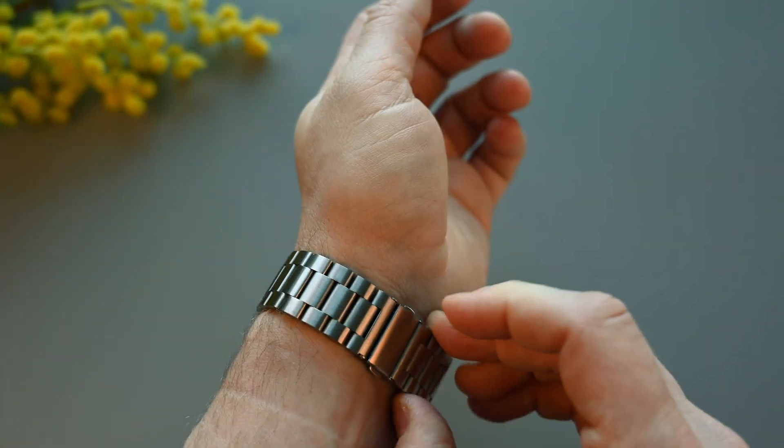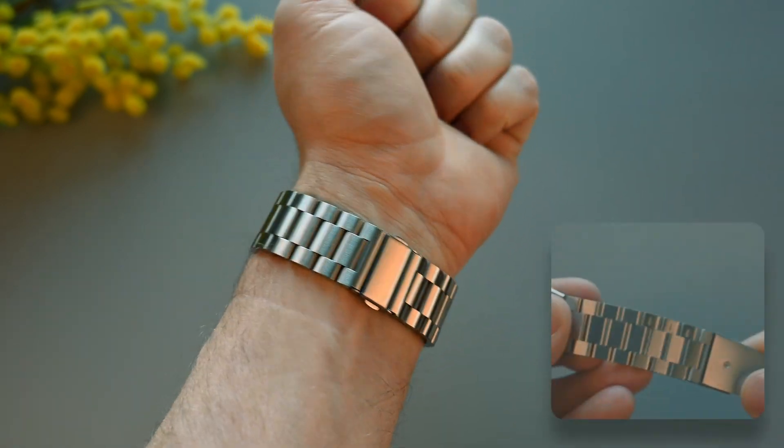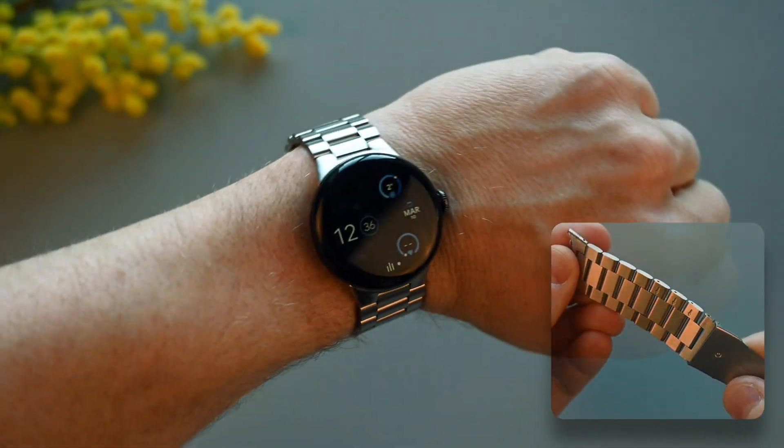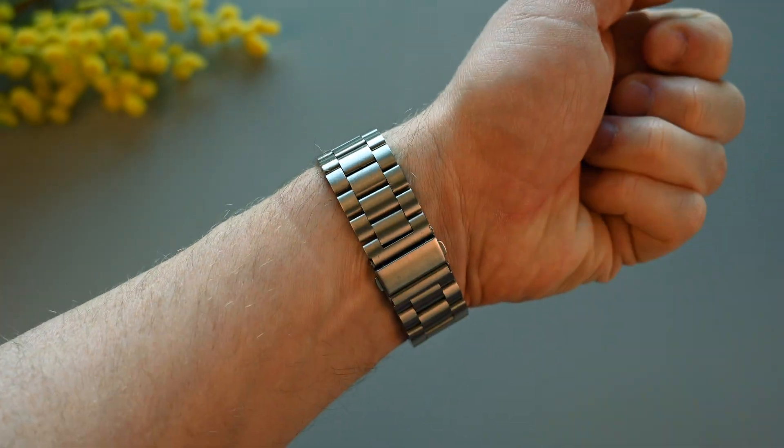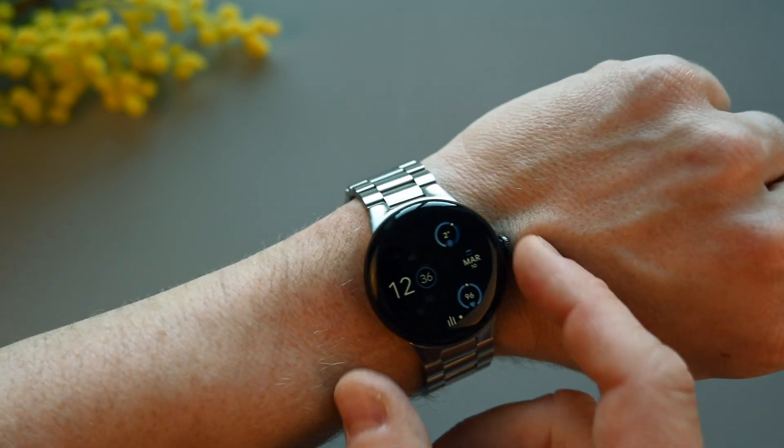Adjusting the length of the bands is as easy as it gets, and it's done the usual way. Just press out the pins, and remove or add a link to adjust it. I think the Google Pixel Watch 2 looks good with metal bands, but what do you think?